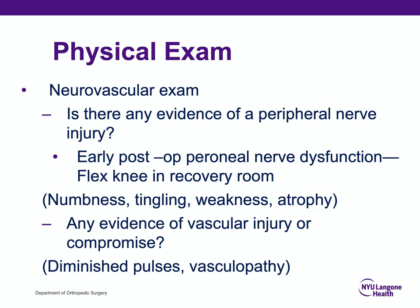Look at the physical exam findings in the narratives for any evidence of peripheral nerve injury. Early post-op peroneal nerve dysfunction should be treated with knee flexion in the recovery room, but look for more subtle signs such as numbness, tingling, weakness, and atrophy. Look for any evidence of vascular injury or compromise — it may not be obvious with absent pulses or a blue foot, but diminished pulses or vasculopathy-type changes may indicate a vascular issue requiring further workup, vascular consultation, and potentially surgical treatment.